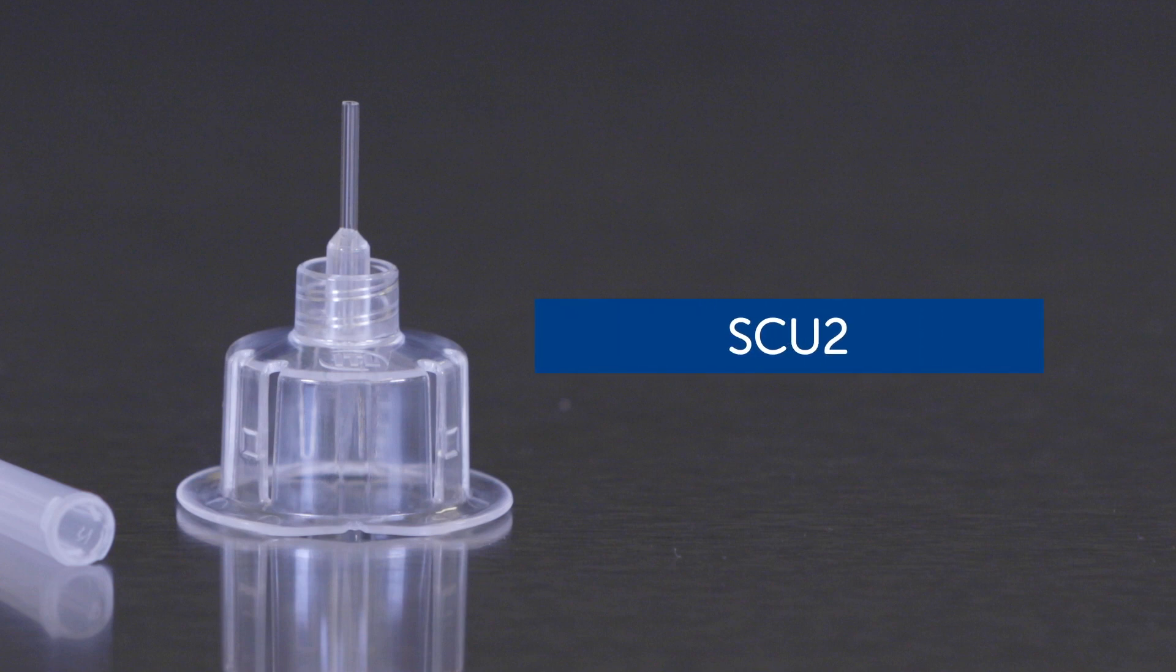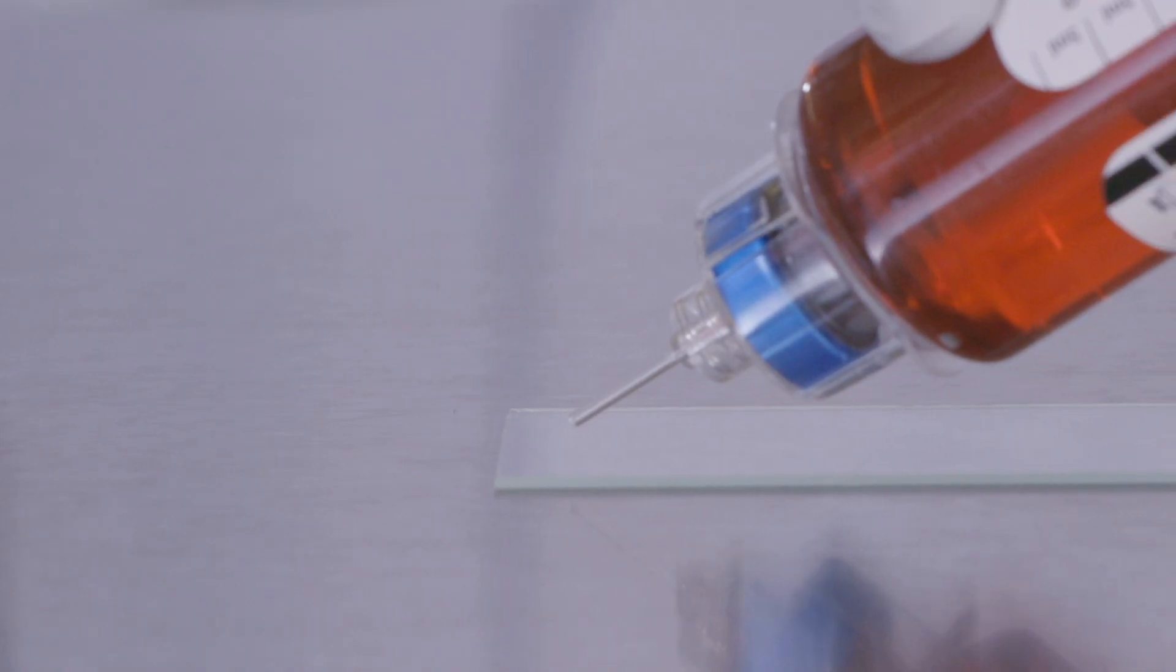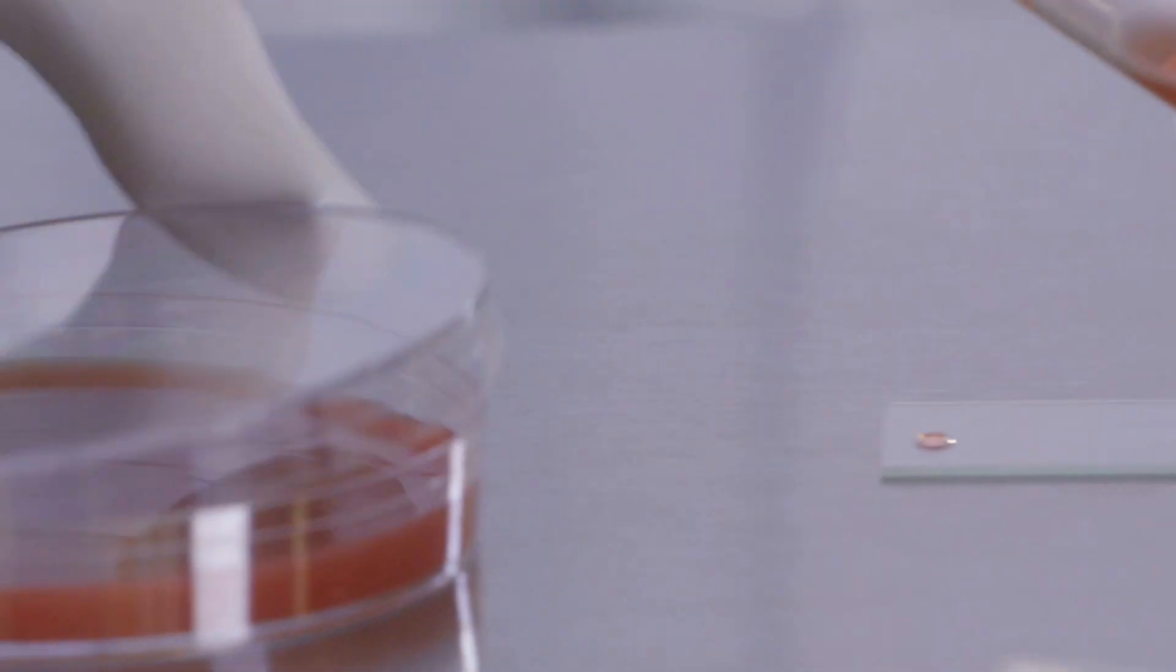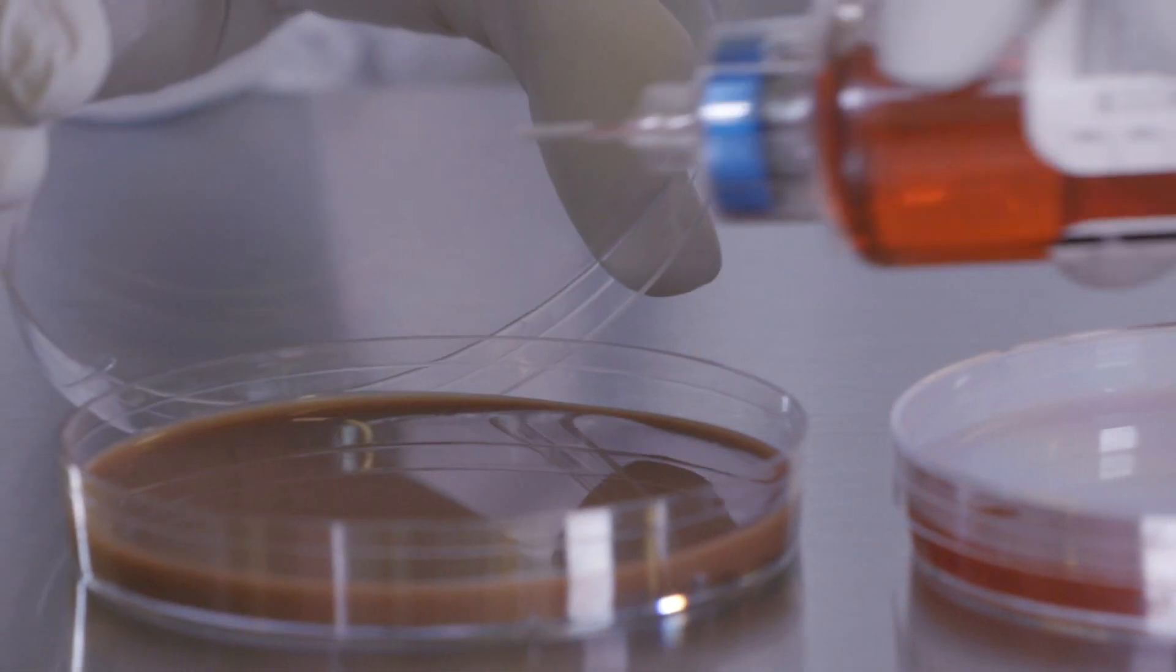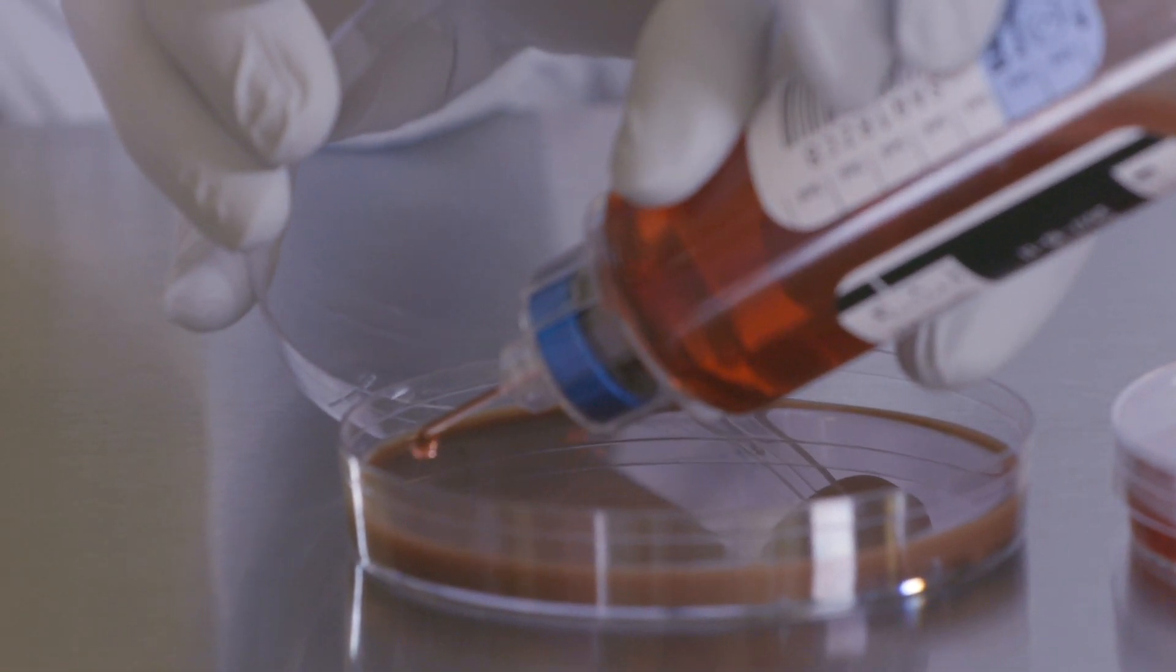SCU-2 is used for applications that require obtaining a sample from a blood culture bottle, such as slide preparation for gram stains, subculture of sample onto media plates, or other tests that require one or multiple drops of sample.